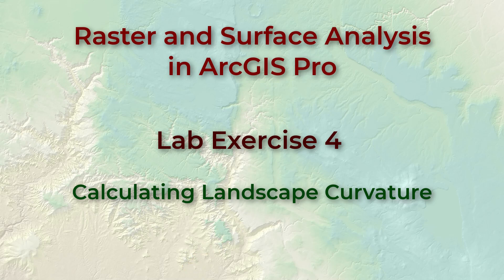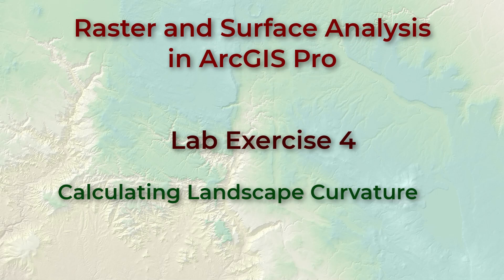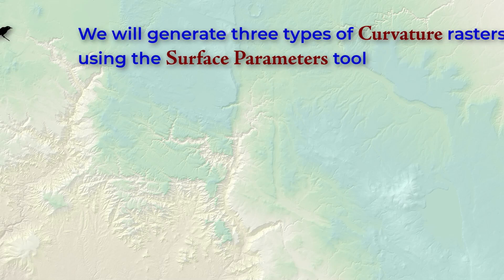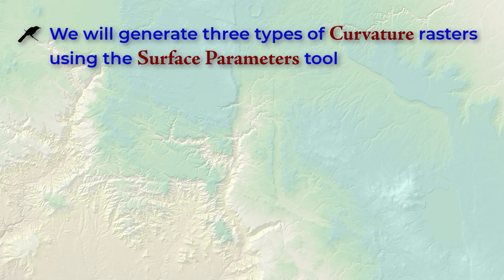Hello everybody, this is Jeff Janess and welcome to our fourth lab exercise on raster analysis. Here we're going to see how to generate several types of curvature rasters from a DEM using the surface parameters tool.